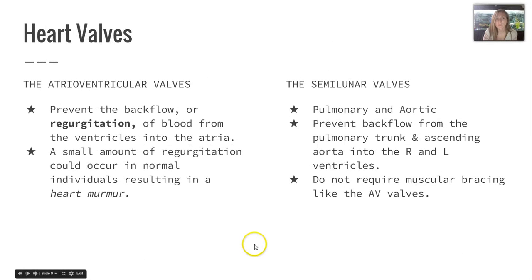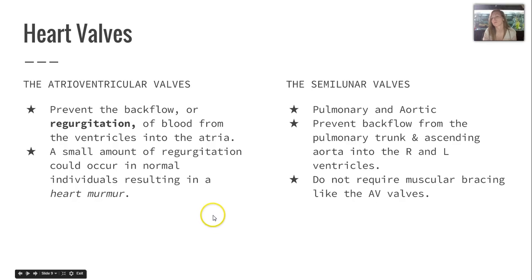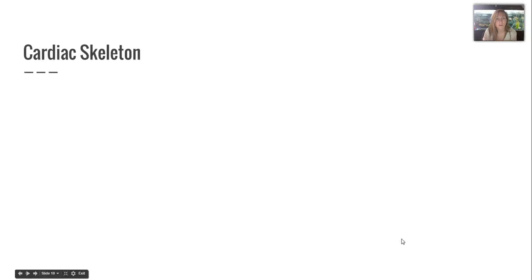Our heart valves include the atrioventricular (AV) valves, which prevent backflow or regurgitation of blood from the ventricles into the atria. A normal person may have a small amount of regurgitation at times, resulting in a heart murmur. The semilunar valves include the pulmonary and aortic valves, which prevent backflow from the pulmonary trunk and ascending aorta into the right and left ventricles respectively, and do not require muscular bracing like the AV valves do.